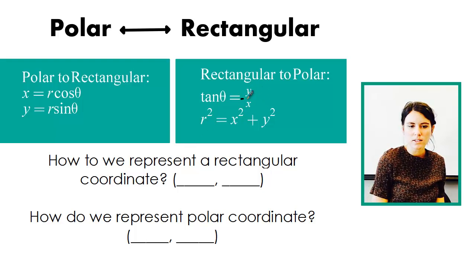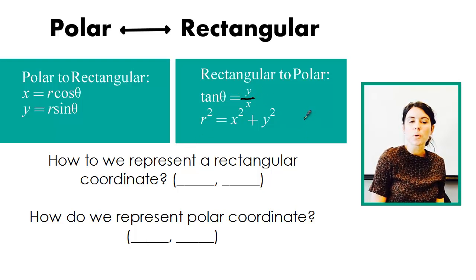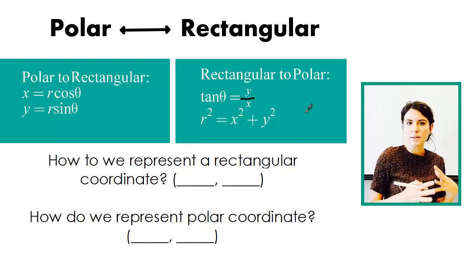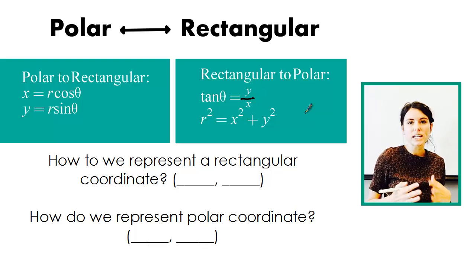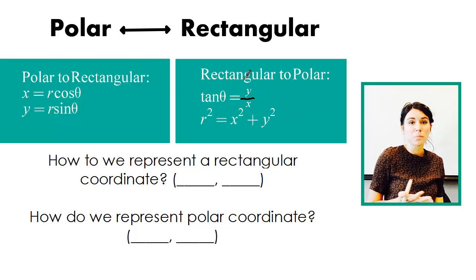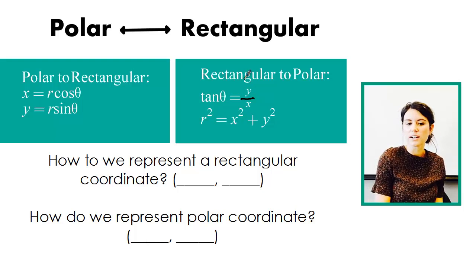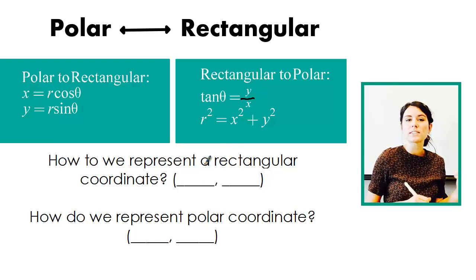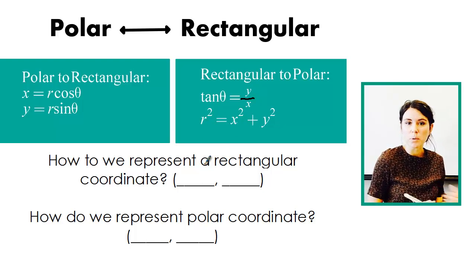And this should say y over x. So what we're going to do is take something in polar form or rectangular form and convert it to the other. And it's pretty simple because we have these basic formulas and we just essentially use the calculator. Now before we do that, I just want to make sure we understand what is the difference between rectangular and polar.